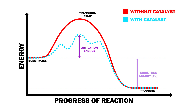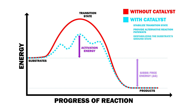Enzymes can lower the activation energy of a reaction in multiple ways: by stabilizing the transition state, by providing alternative reaction pathways, by destabilizing the substrate's ground state, and/or by orienting the substrates in a manner which decreases the entropy change during their reaction.